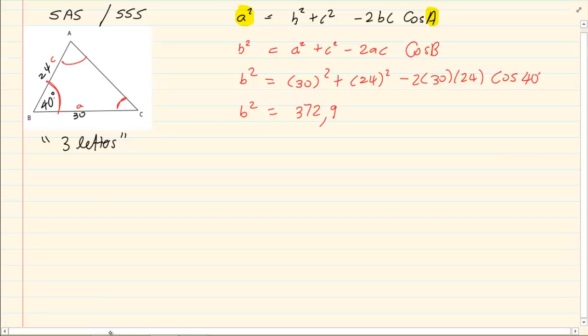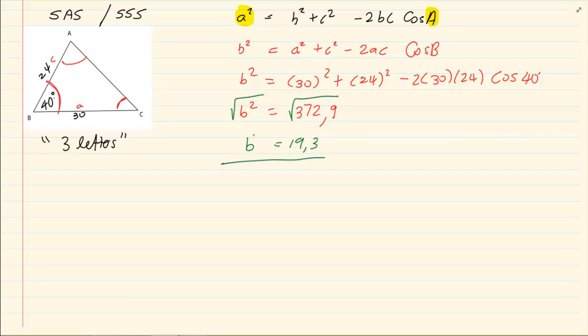But remember they want b. So what do we do? We square root it. So we square root the answer and we will have 19.3. But remember we are only taking the positive version because it's a length we don't need a negative version.